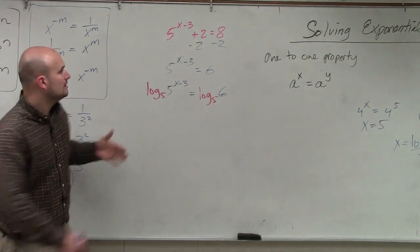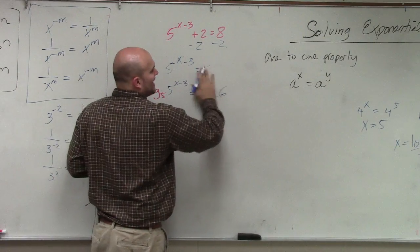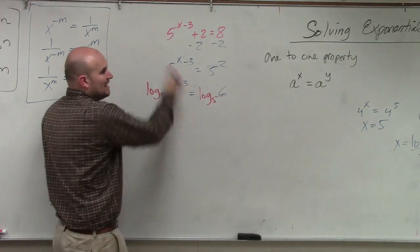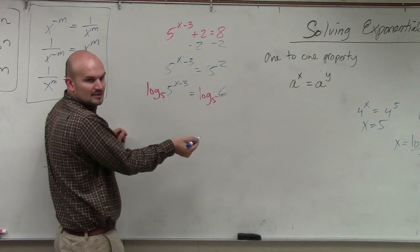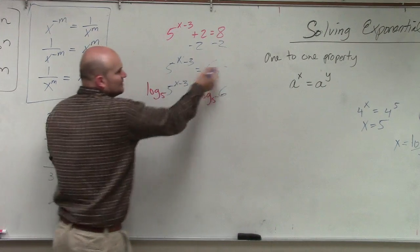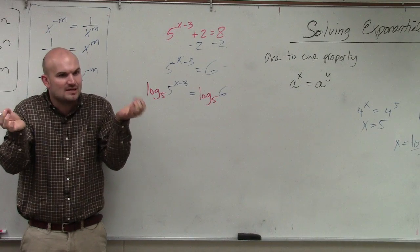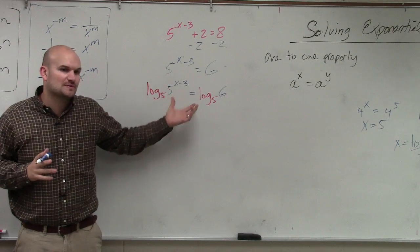Before, like for instance, before we had a problem like this. So what did we do? We rewrote 25 as 5 squared. Then we canceled out the 5s, right? And we could solve it. But now you can't rewrite 5 and 6 as two exponents with the same base. So you have to take the log of both sides.